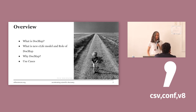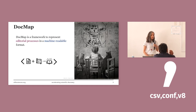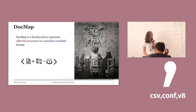By the end of this presentation you will have a clear understanding of what DocMap is, what is eLife's new model and the role of DocMap, and why we have chosen to use DocMap. I will additionally give some use cases during the presentation. In a basic definition, DocMap is a framework to represent the editorial process in a machine-readable way. This definition raises two key questions: what is machine-readable and why it is important, and what is an editorial process.